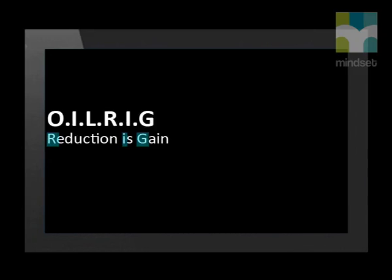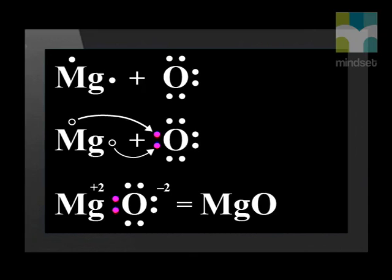In this reaction, magnesium is oxidized and oxygen is reduced to become magnesium oxide. Magnesium was oxidized because it experienced oxidation, the loss of electrons. Oxygen was reduced because it experienced reduction, the gain of electrons.